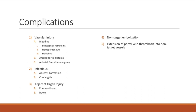General complications — those that could occur during any instrumentation involving the liver — include subscapular hematoma, hemoperitoneum, hemobilia, abscess formation, cholangitis, arterioportal fistulas, and pneumothorax. Complications specific to PVE include non-target embolization and extension of portal vein thrombus into non-target vessels.